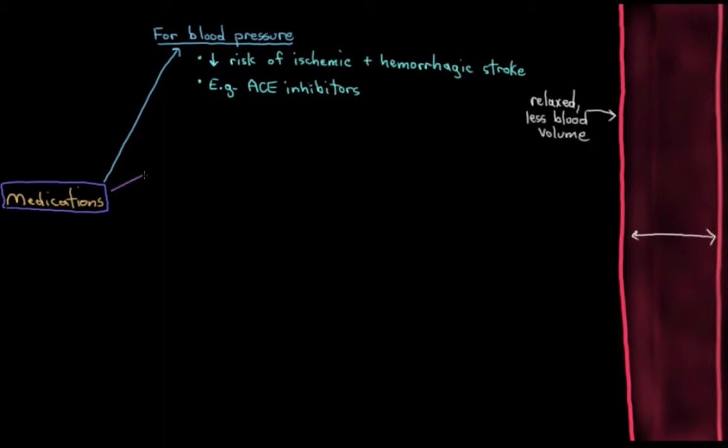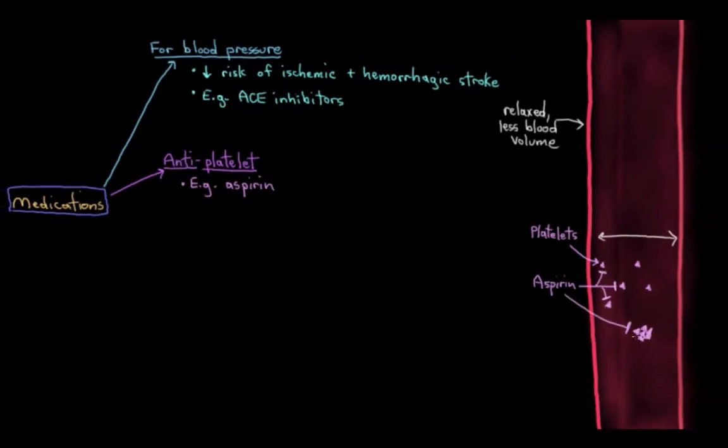Next, we've got antiplatelet medications like aspirin. These antiplatelets prevent blood clots from forming inappropriately within your bloodstream. Drugs like aspirin stop platelets in your blood from sticking together and forming these little precursors to full-blown blood clots. The fewer the precursors - platelet plugs as they're called, these little precursor clots - the fewer the blood clots that are able to be created.